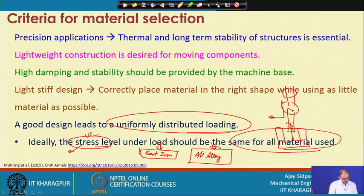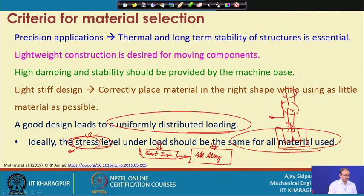If the cast iron size and the aluminum size are kept the same, aluminum will be more stressed compared to cast iron. But if you increase the cross-sectional area of the aluminum component in such a way that the total weight is not increased, you can maintain the same stress level across the different components.